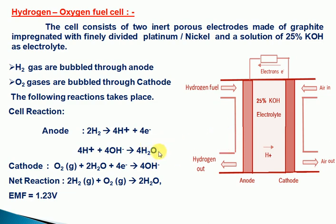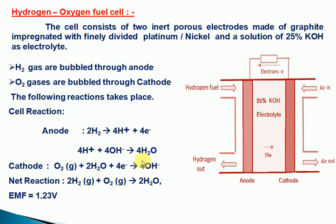Water is the product at the anode side. At the cathode, oxygen reacts with water molecules, and the 4 electrons from the anode travel through the external circuit. Cathode reduction reactions occur, resulting in the formation of 4OH⁻. These 4OH⁻ ions are taken up at the anode, making it a balanced reaction.